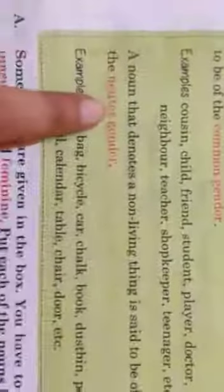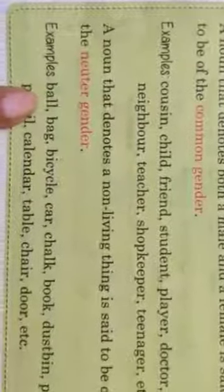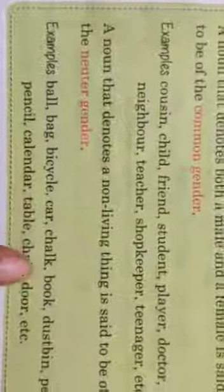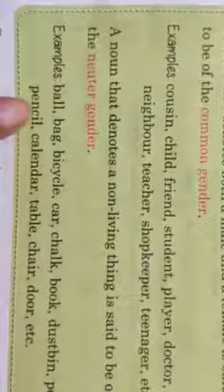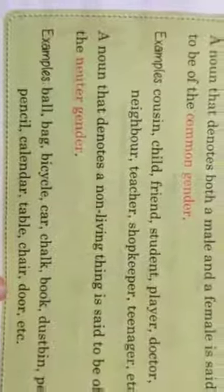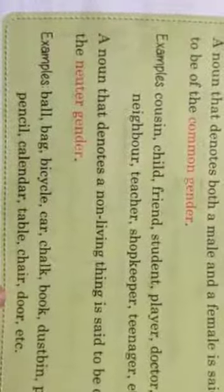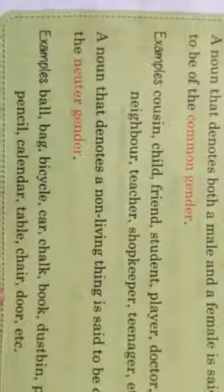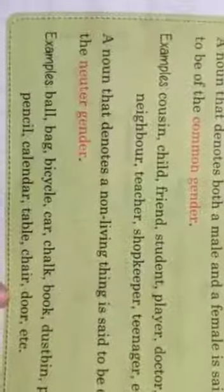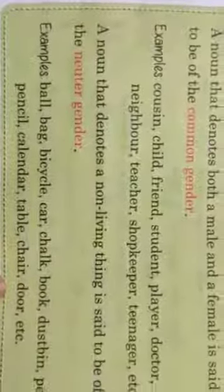Now there are certain nouns that talk about non-living things which have got no life in them. They are inanimate objects like bag, ball, bicycle, car, chalk, book, dustbin, pen, pencil, calendar, table, chair, door. They are said to be of neuter gender. They do not belong to masculine gender or feminine gender, neither are they common. You can put them under neuter gender because they denote a non-living, inanimate object which has got no life.